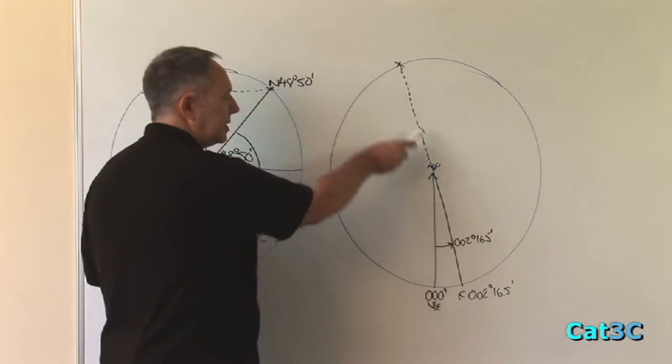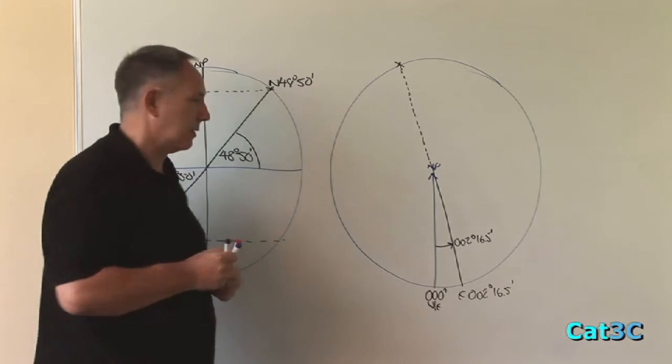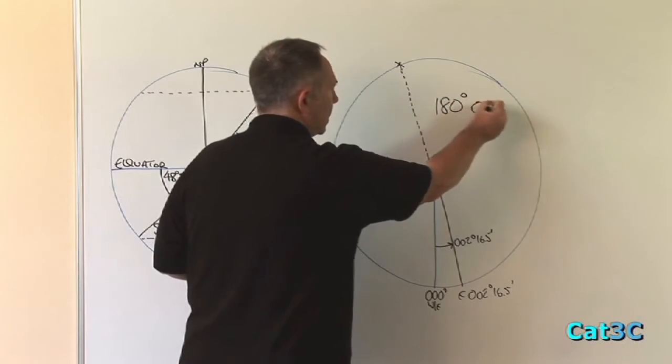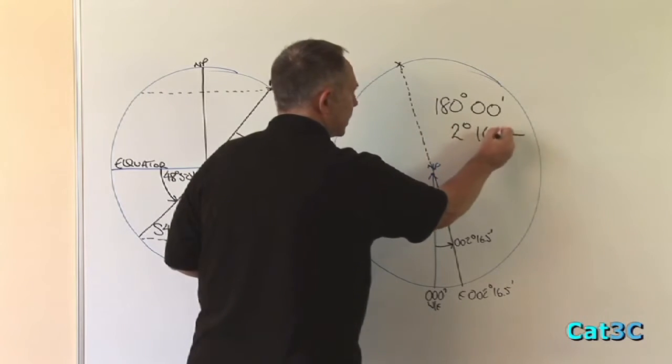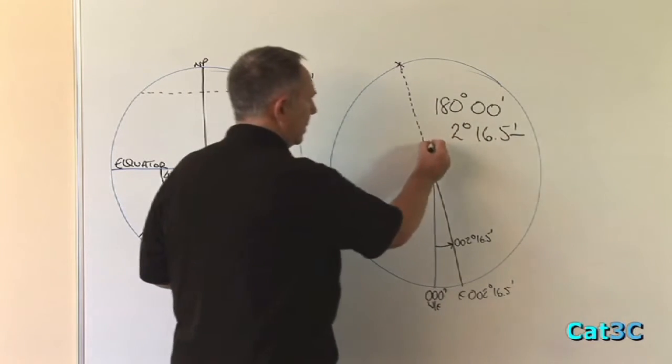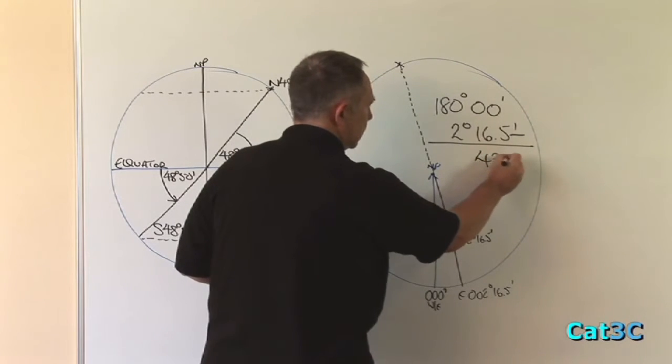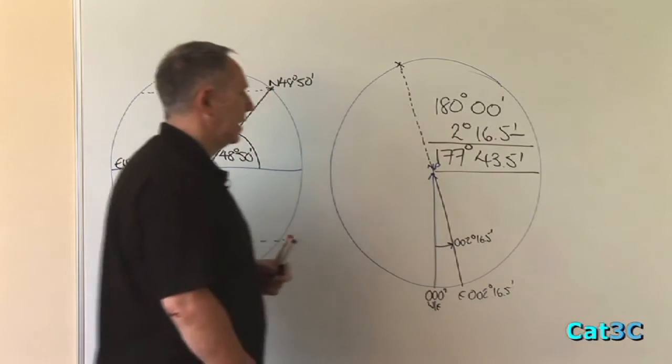A meridian plus its opposite or anti-meridian will always add up to 180 degrees. So 180 degrees minus 2 degrees 16.5 minutes gives us 177 degrees 43.5 minutes.